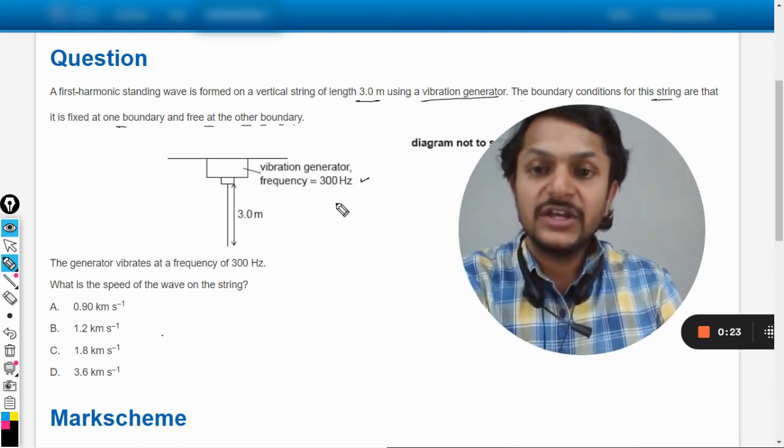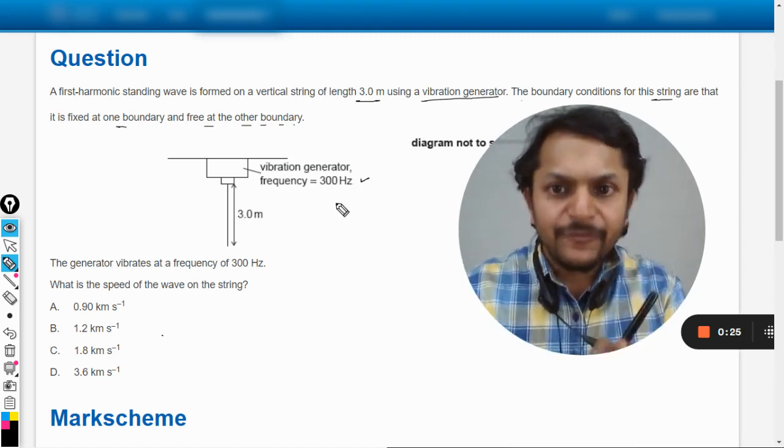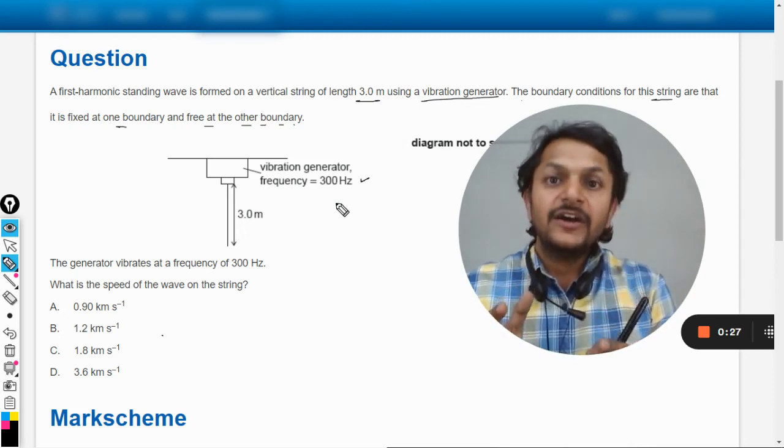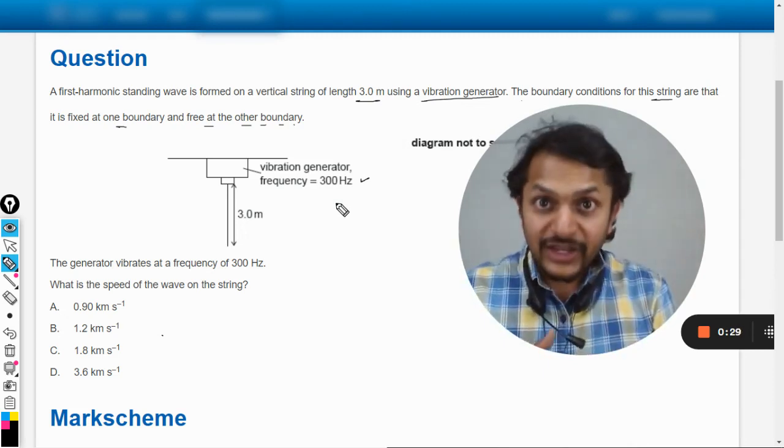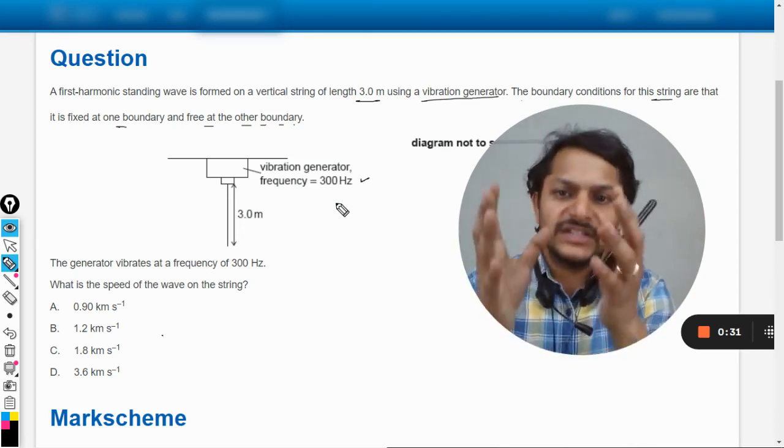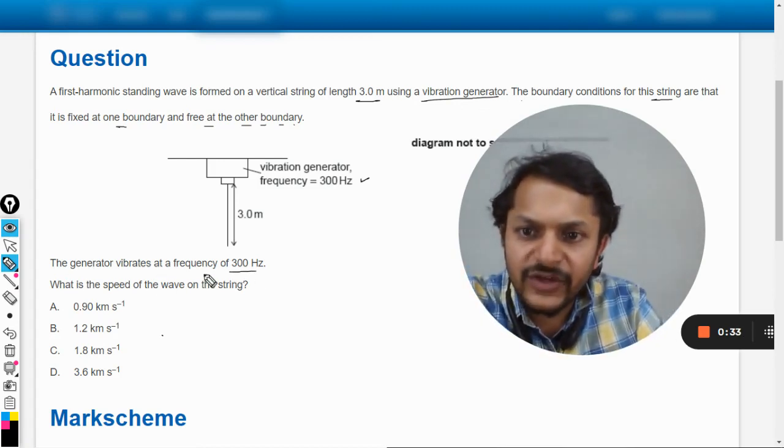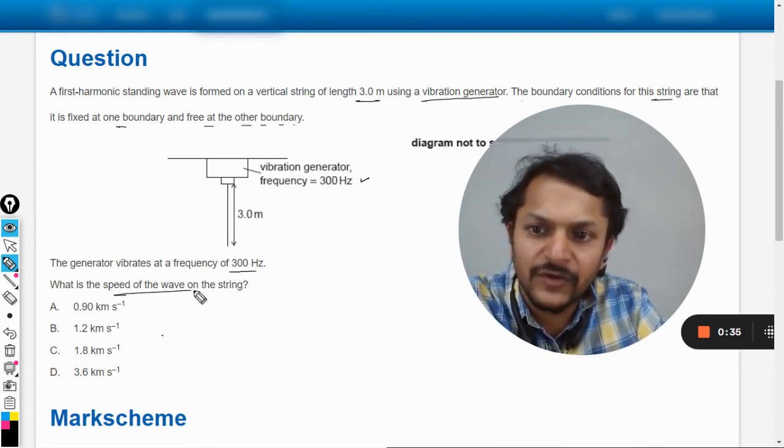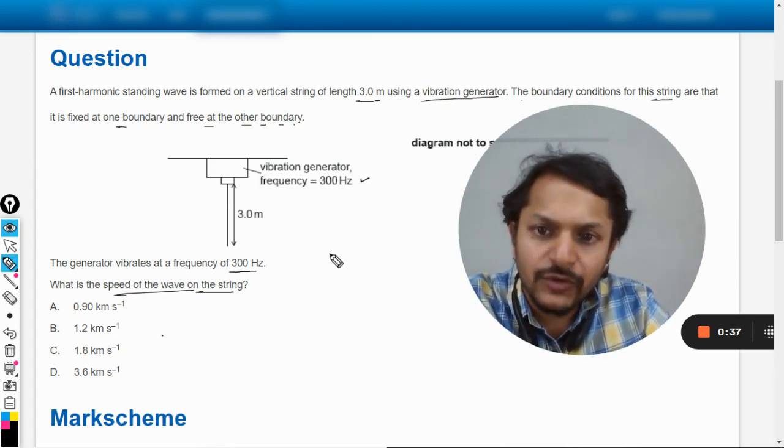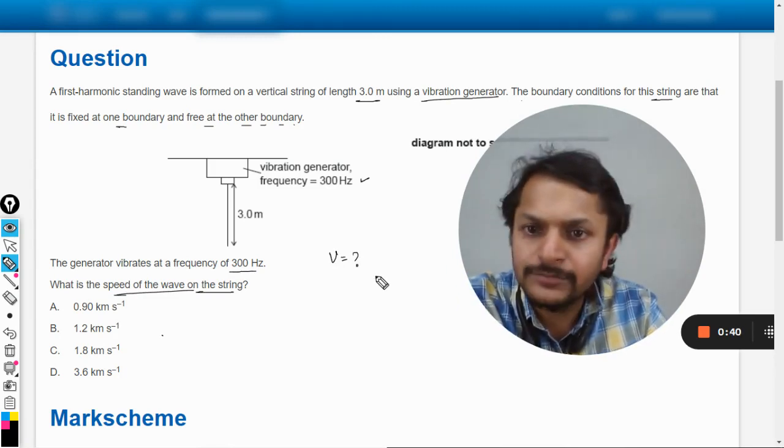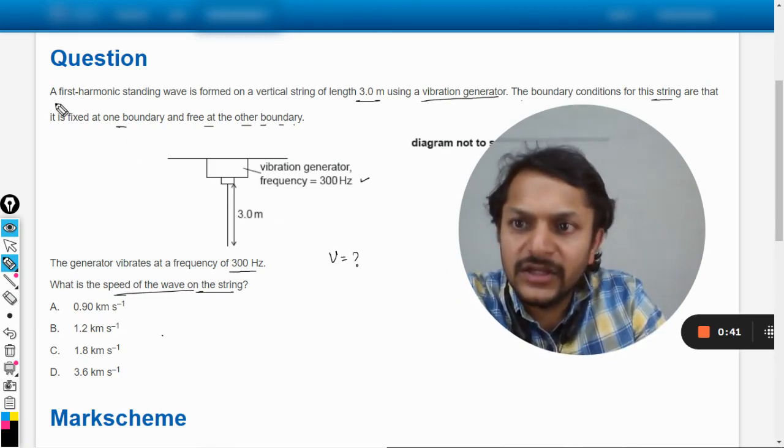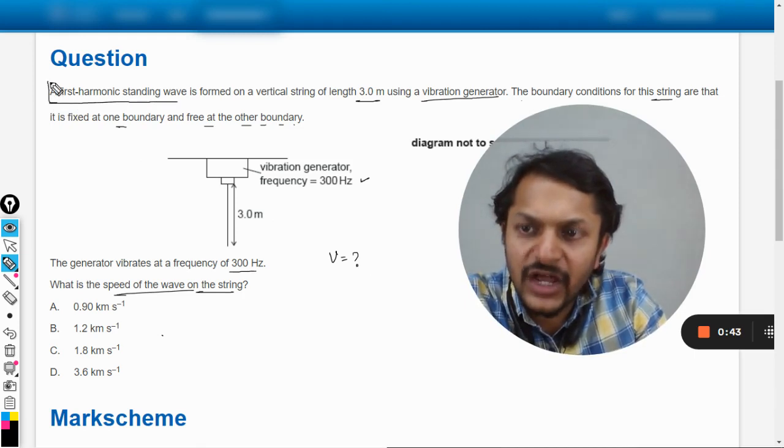The frequency is given as 300 hertz, so the same frequency wave will be transmitted into the string. The generator vibrates at a frequency of 300 hertz. What is the speed of the wave on the string? So we want to find the velocity.